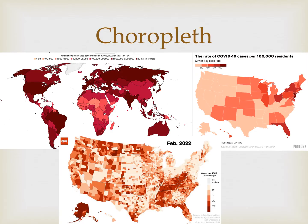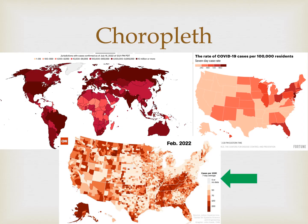Choropleth maps will typically have different shades of one color to represent variations in different amounts of a single dataset. For example, each of these maps examine COVID cases, but they are aggregated or organized by different units of space. One is organized by country, another by U.S. state, and finally within states by U.S. counties. What do you notice about these maps? What observations do you have? What story do they tell? Does one map tell a story more or less effectively? What questions do you have?